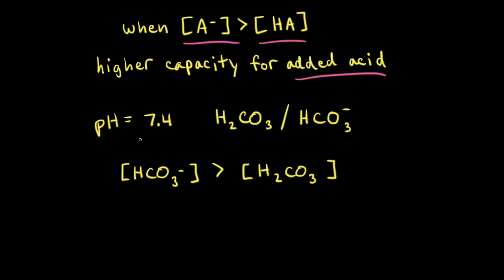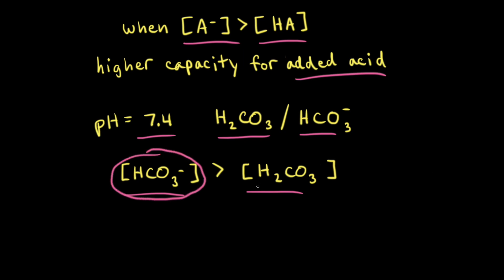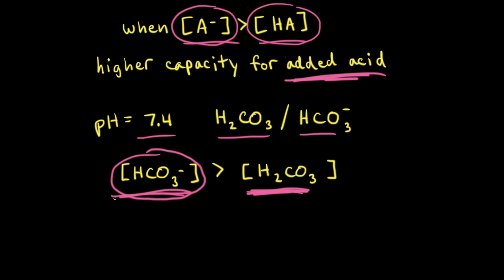As an example, let's think about blood which has a pH of 7.4. The major buffer system used to control the pH of blood is the carbonic acid bicarbonate buffer system. In blood, the concentration of bicarbonate is greater than the concentration of carbonic acid. Since bicarbonate is the conjugate base to carbonic acid, the concentration of the conjugate base is greater than the concentration of the weak acid. Therefore the buffer system has a higher capacity for added acid than added base. This is because the products of metabolism entering the bloodstream are mostly acidic, and the bicarbonate anion can react with those acidic products and neutralize them, allowing the buffer system to resist large changes to the pH of the blood.